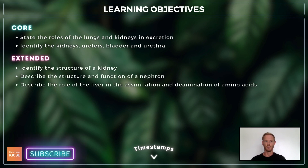For extended, you also need to identify the structure of a kidney, describe the structure and function of a nephron, and describe the role of the liver in the assimilation and deamination of amino acids.